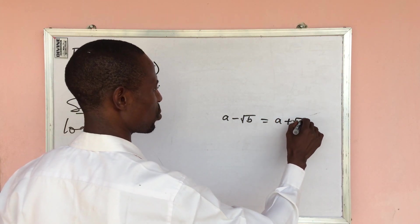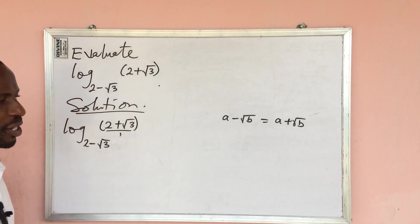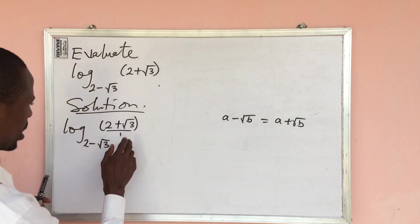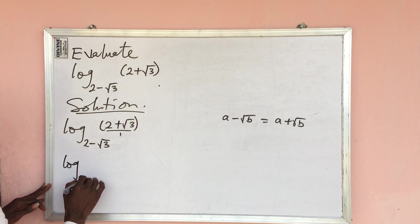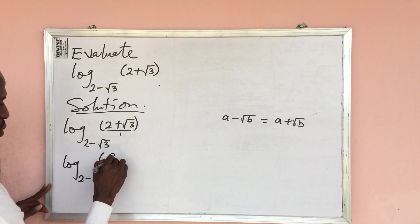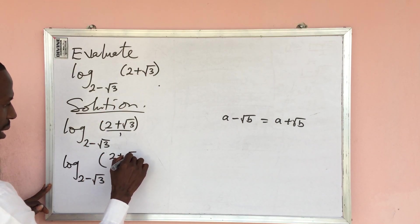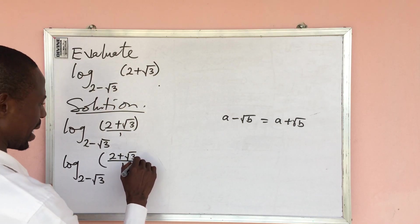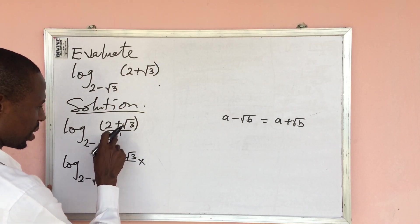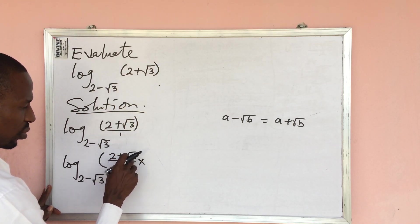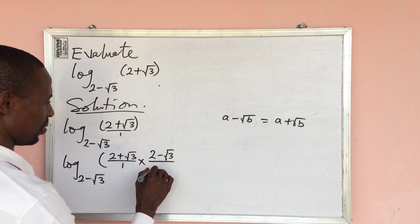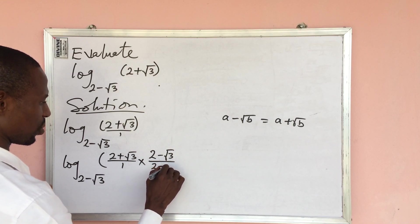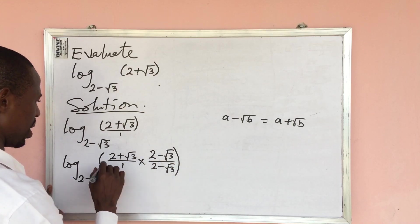The rule says that if you have (a − √b), its conjugate is (a + √b). Applying that, this expression becomes: log[(2 + √3) × (2 − √3)] all over [(1) × (2 − √3)], with (2 − √3) as the base.